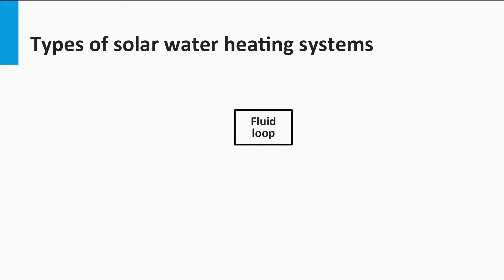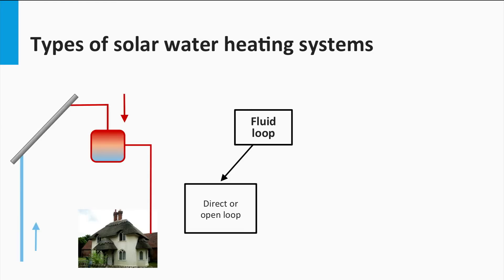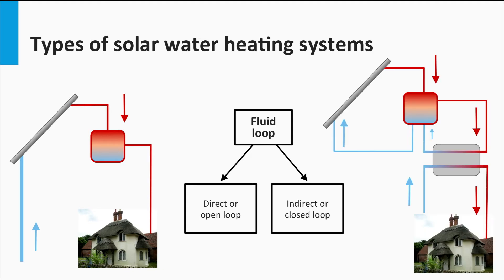There are several ways to classify solar water heating systems. The first way is by the fluid heated in the collector. When the fluid used in the application is the same that is heated in the collector, it is called a direct or open loop. When the fluid heated in the collector goes to a heat exchanger to heat up the utility fluid, it is called an indirect or closed loop.